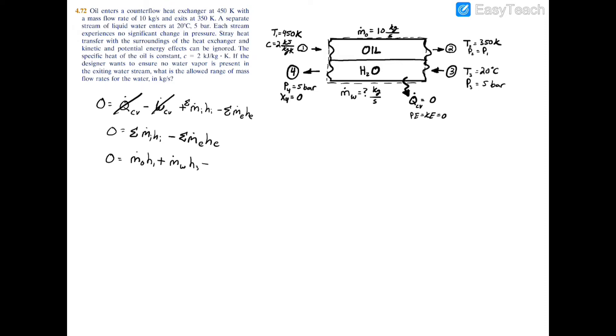Plus m dot w and it's going to be h3 for inlet 3, and that's all of our inlets. Now you have to subtract all of our exits, so that's all of our inlets in that set of brackets.